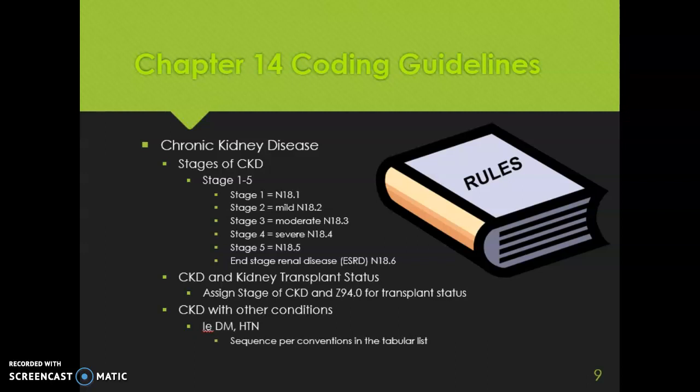There are specific coding guidelines for Chapter 14. Digestive system coding does not have specific guidelines — there is just a placeholder for future guidelines. For chronic kidney disease, guidelines dictate coding based on the stage. Stage one is coded to N18.1.